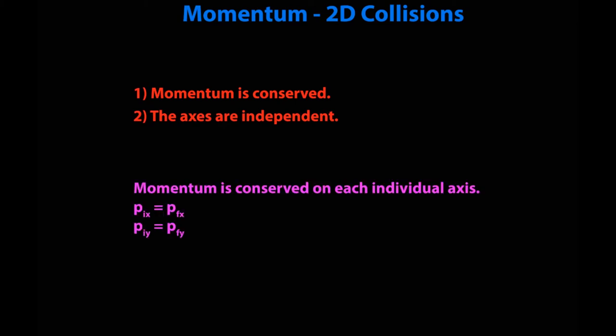So when it comes to two-dimensional collisions there are two key points. One, momentum is conserved. This was of course true for all our one-dimensional collisions. It is true here as well with one addendum. The axes are independent, which means putting those two things together, momentum is conserved on each individual axis. Momentum initial on the x equals momentum final on the x, and momentum initial on the y equals momentum final on the y.